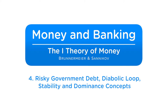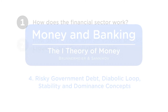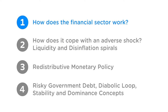Welcome back to the final part of our Money in Banking video series. In part one, you learned how banks create money. In part two, you saw how an adverse shock is amplified through the liquidity and disinflation spiral. Part three showed how redistributive monetary policy can mitigate these adverse spirals by affecting asset prices. Now, in part four, we study economic stability in a world in which the government might default on its debt. We introduce the diabolic loop or doom loop and three dominance concepts, and finally put everything together for the full picture.